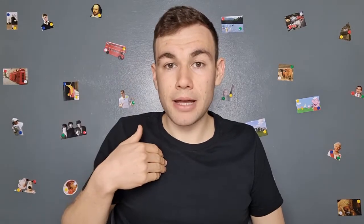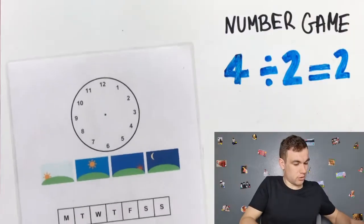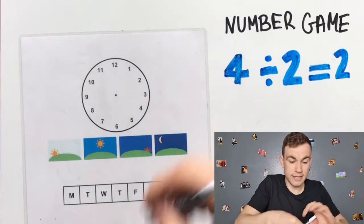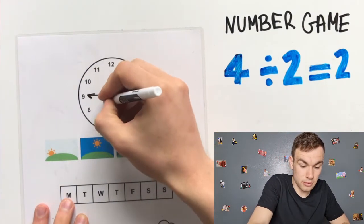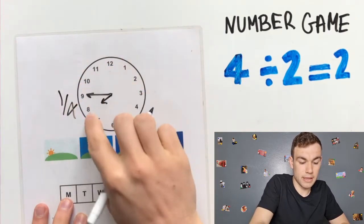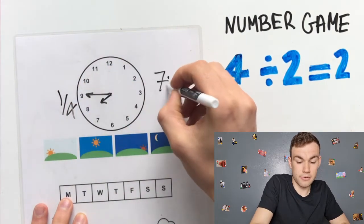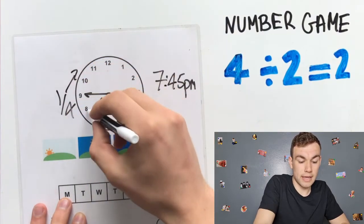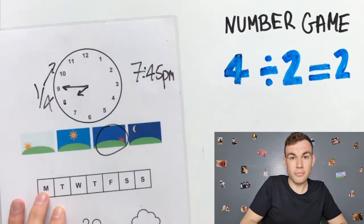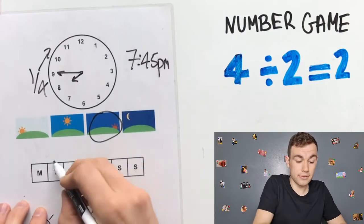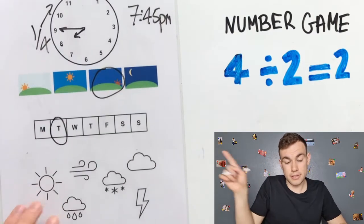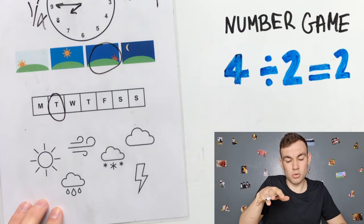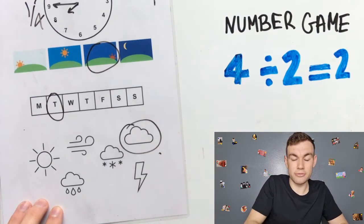Hello, I'm Andrew and today I am going to play a number game. Right now, the time is quarter to eight, so 7:45pm, quarter to eight in the evening. Today is Tuesday, and outside the weather is so-so, it is cloudy today.